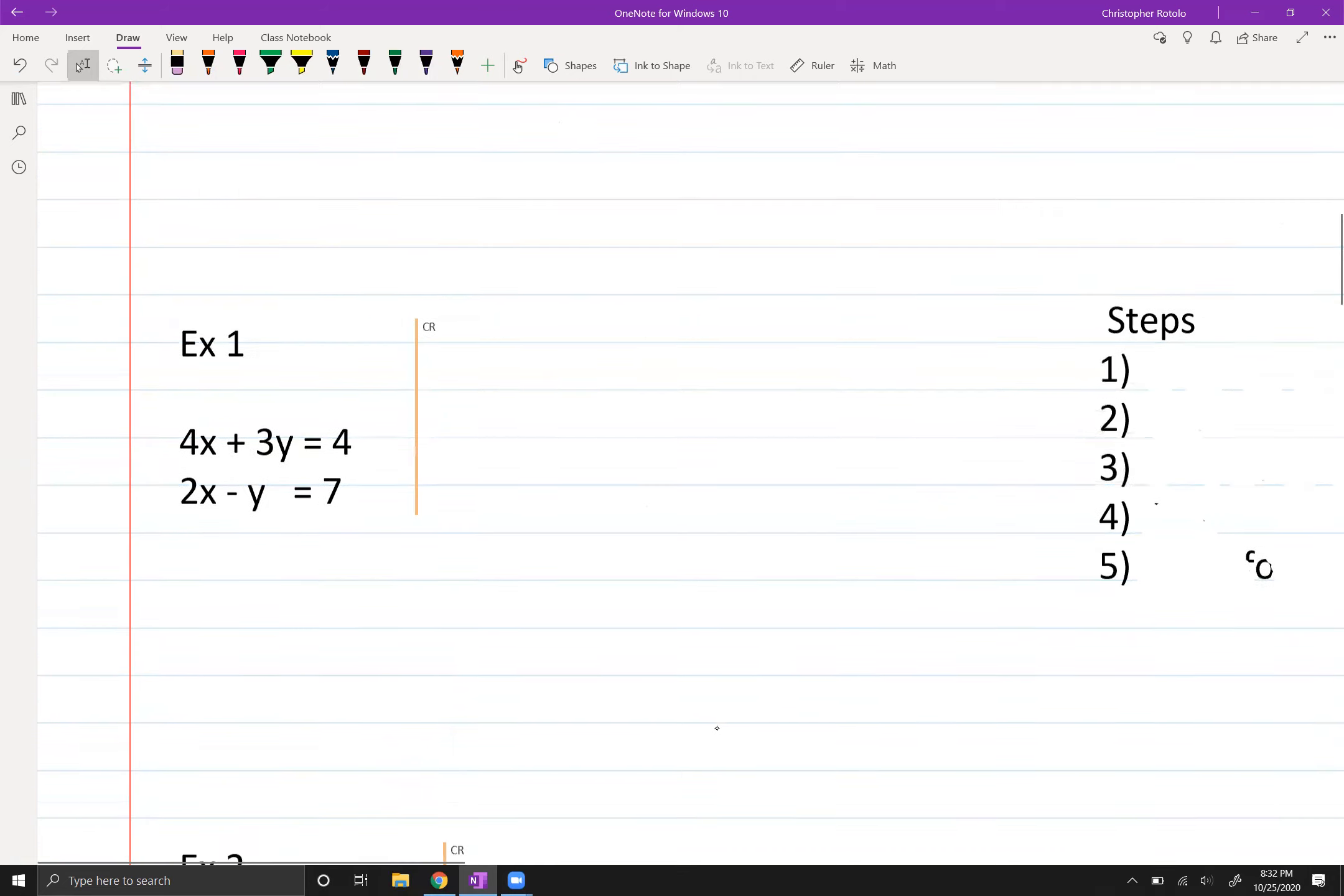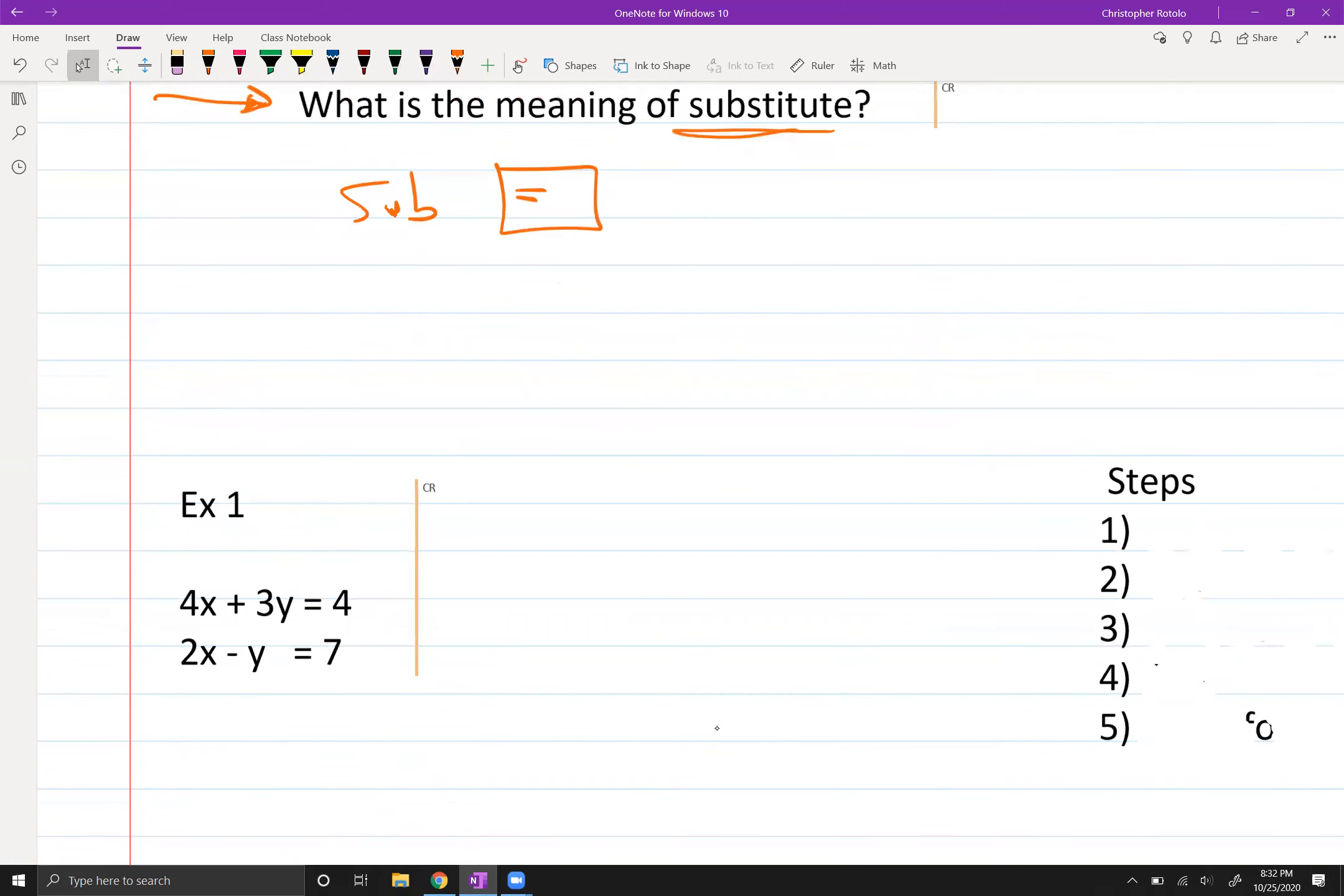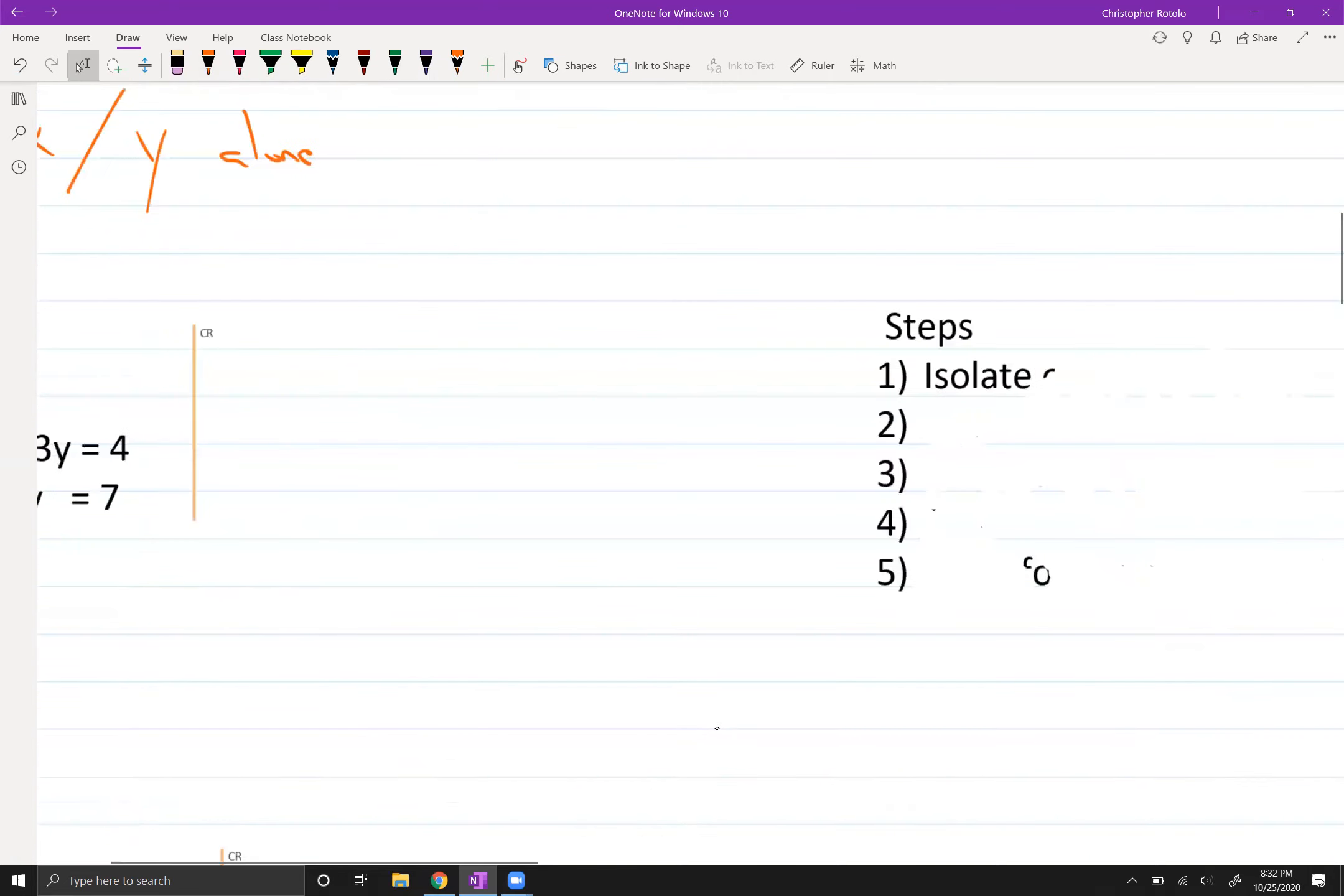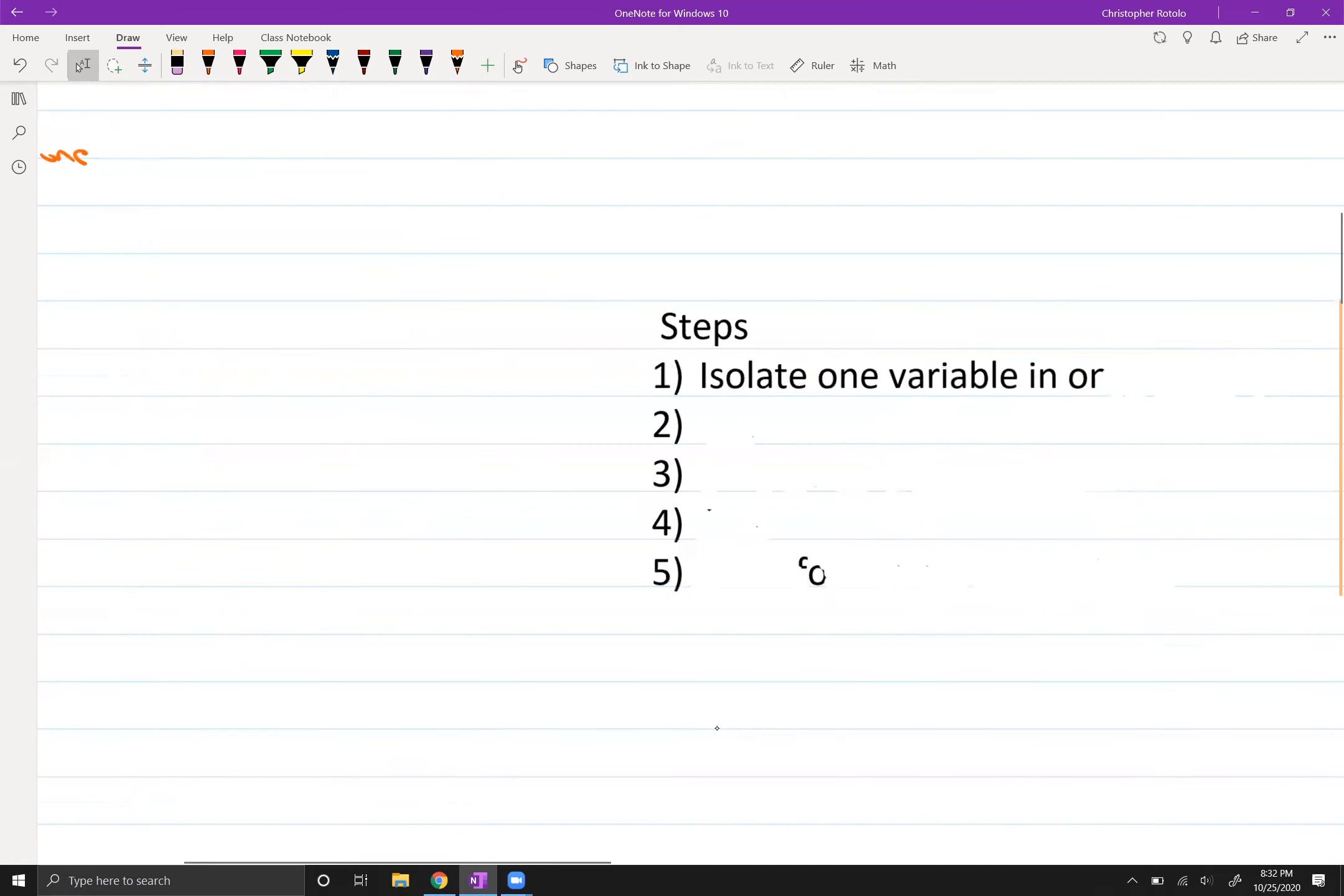So what we're going to do as we look at these is we definitely want to be looking for getting some variable, either X or Y. I want to get that alone. And that's going to lead into some of our steps over here. We want to isolate one variable in one of the equations.